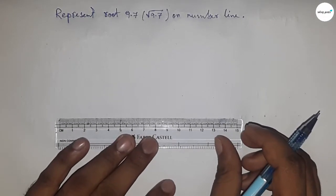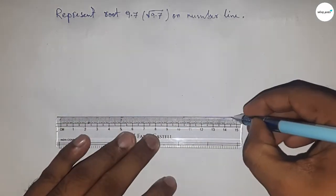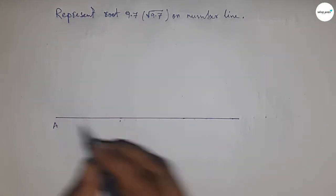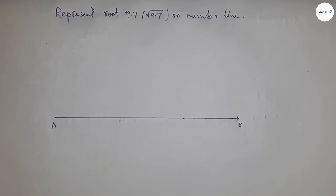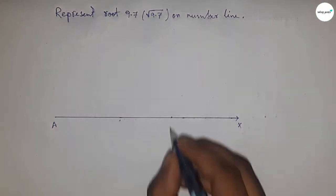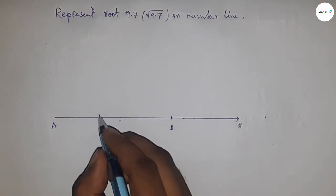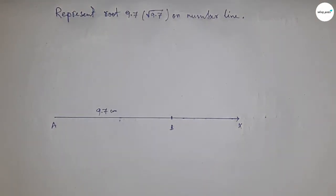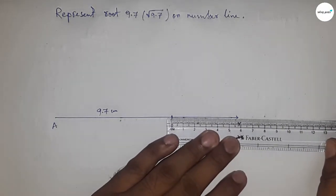First, draw a line of any length. This is the AX line. Next, take a 9.7 centimeter distance using a compass. Mark point B, so AB equals 9.7 centimeters.